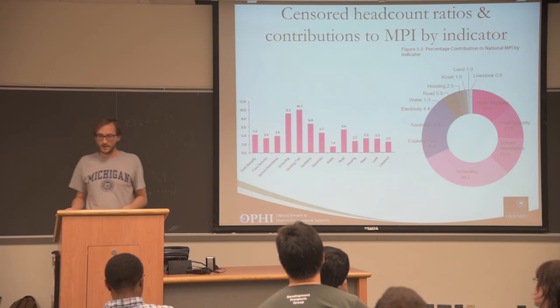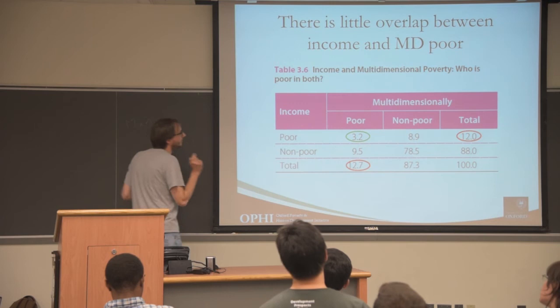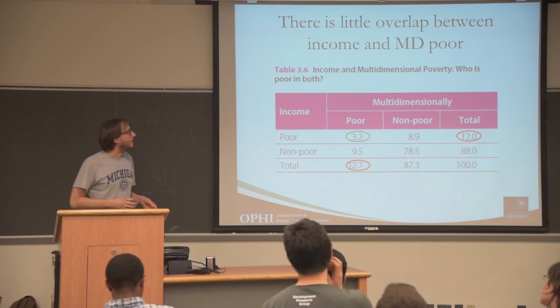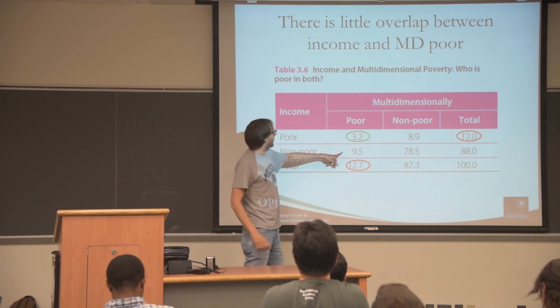Looking at the overlap between income and multidimensional poverty: both approaches identify a similar share as poor — 12.7% and 12% respectively. However, only 3.2% are identified as poor using both approaches. The 9.5% who are multidimensionally poor but not identified by the income approach represent the additional information gained from using the MPI. This is the added value of using the MPI alongside income measures.